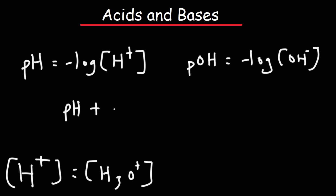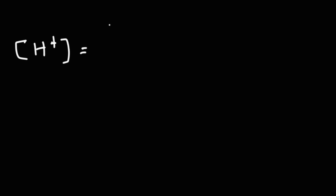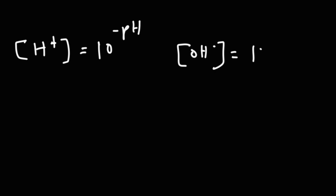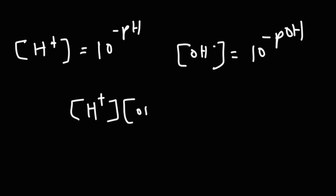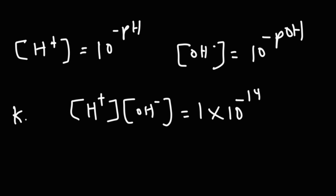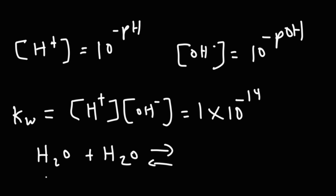The pH plus the pOH adds up to 14. If you need to calculate the H+ concentration from pH, you use this formula: it's 10 raised to the negative pH. To calculate the hydroxide concentration, it's 10 to the negative pOH. The concentration of H+ times OH- equals 1×10⁻¹⁴, which is equal to the autoionization constant of water, Kw.